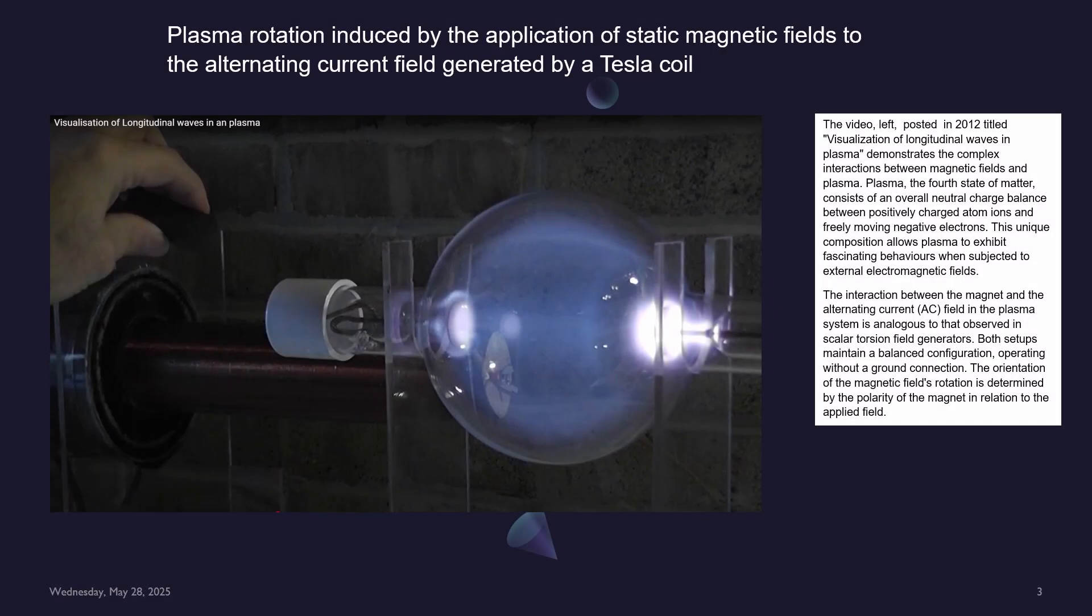The video posted in 2012 titled Visualization of Longitudinal Waves in Plasma demonstrates the complex interactions between magnetic fields and plasma. Plasma, the fourth state of matter, consists of an overall neutral charge balance between positively charged atom ions and freely moving negative electrons.